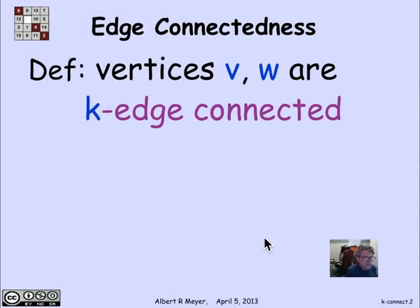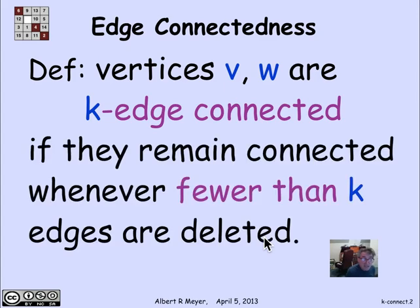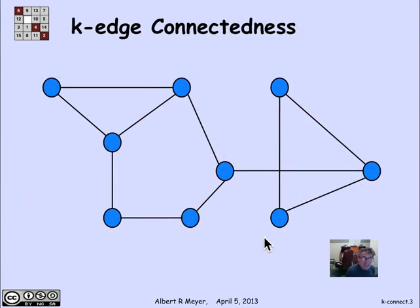Connectivity is more than just an all or nothing affair. We can talk about how connected a graph is. Let's begin with two vertices. Two vertices are said to be k-edge connected if they remain connected if you remove fewer than k edges from the graph.